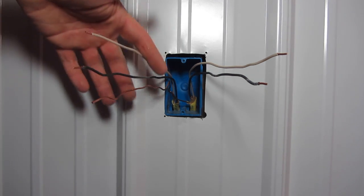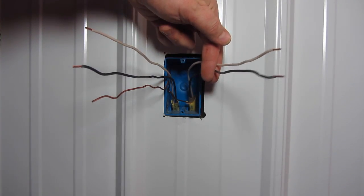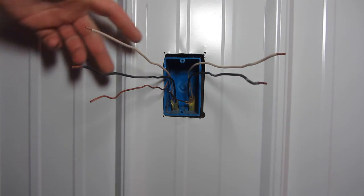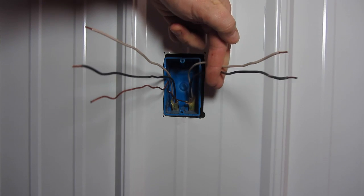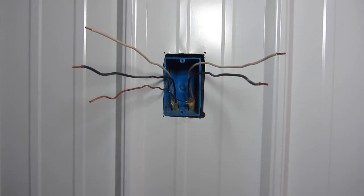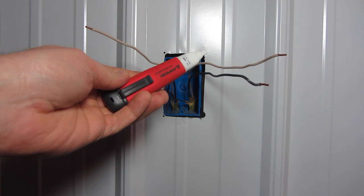Now, how do we know this side is the line and this side is the load? Well, when you turn the switch on, this side will be hot. This side will not be hot. You can test that with a wire tester.